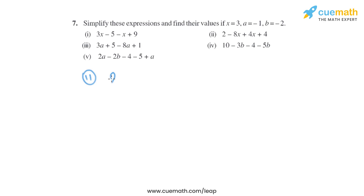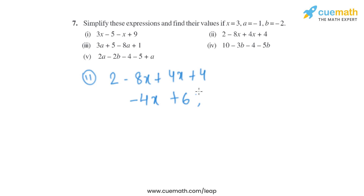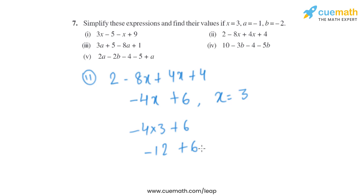The second expression is 2 minus 8x plus 4x plus 4. The like terms are minus 8x and plus 4x, giving us minus 4x, and 2 plus 4 gives us 6. So the simplified form is minus 4x plus 6. Putting x equals 3, it becomes minus 4 into 3 plus 6, which is minus 12 plus 6, which equals minus 6.